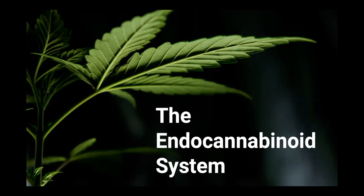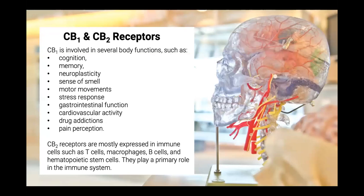The difference between these two receptors is really important to understand in terms of how the various cannabinoids affect our bodies. Cannabinoid one receptors exist mainly in the brain, but are also expressed in the liver, thyroid, uterus, bones, and testicular tissues. The function of the CB1 receptor is to mediate major neurotransmitter systems.